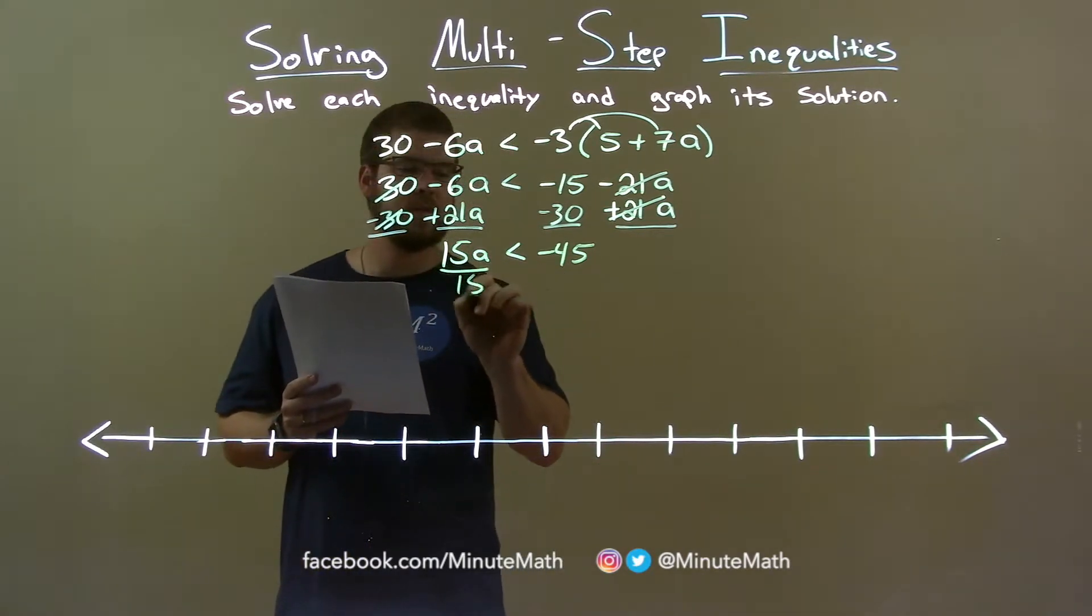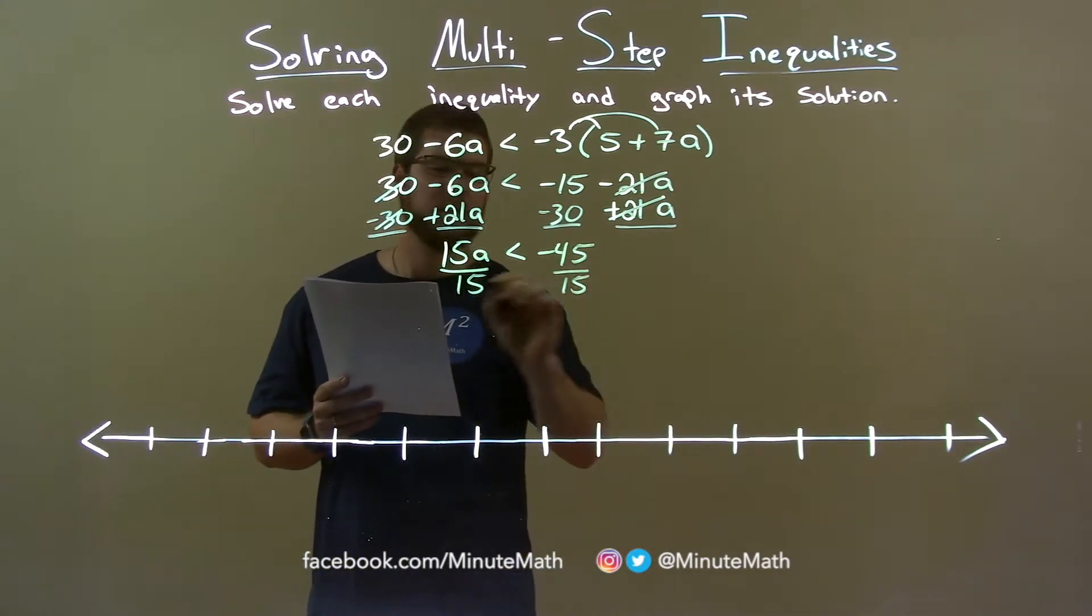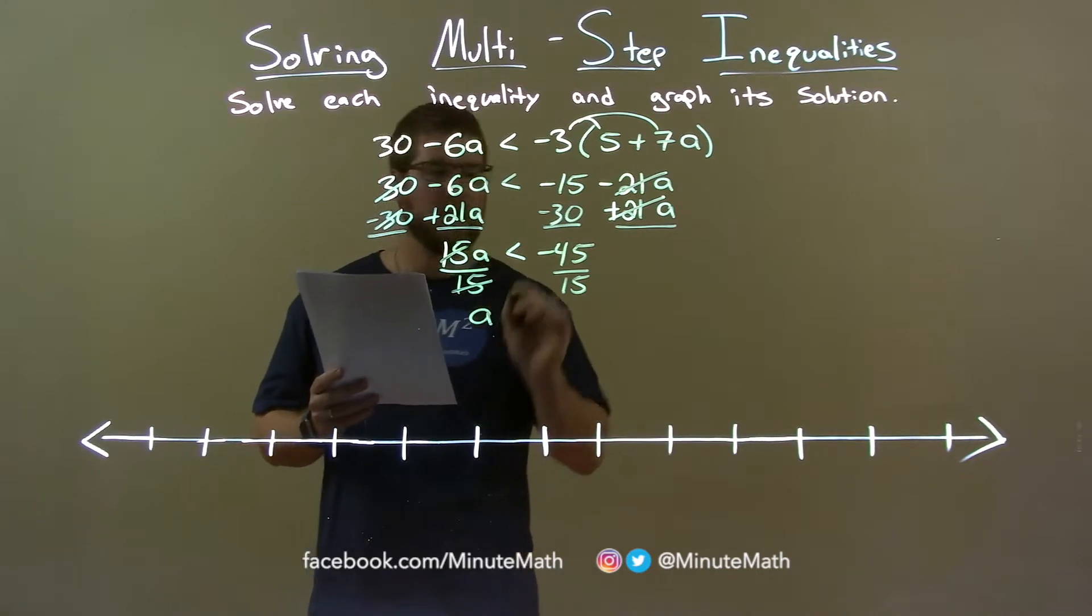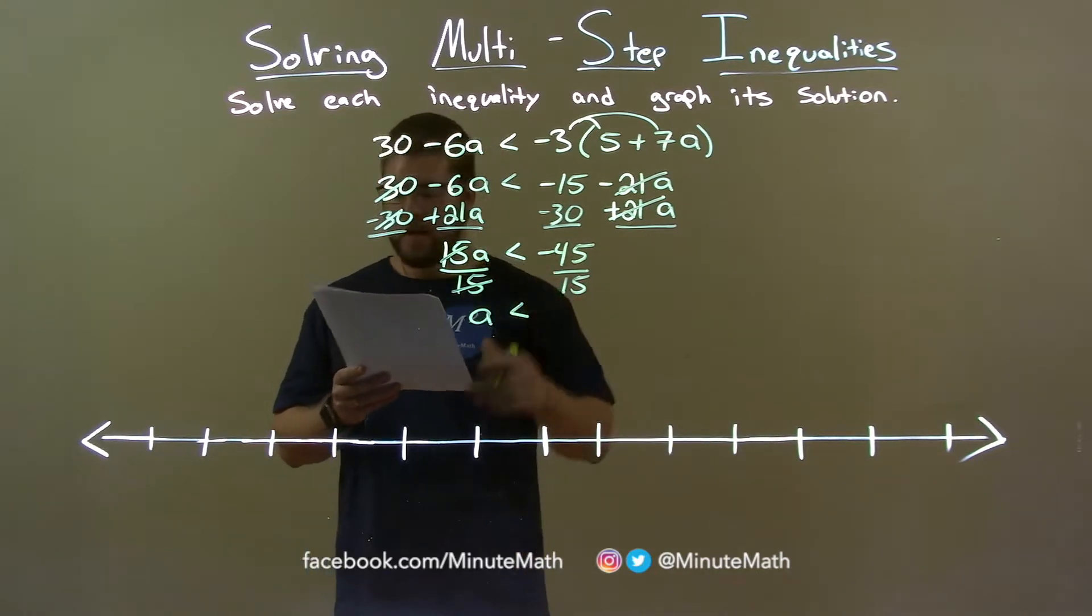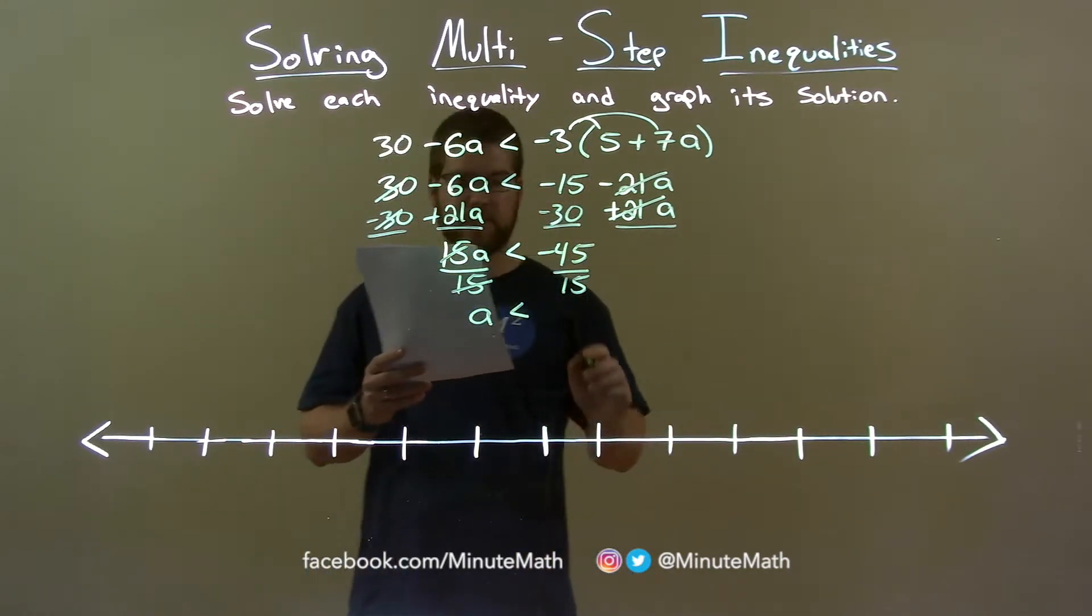Divide both sides by 15, it's my last step here, and now a is by itself. So, less than, and negative 45 divided by 15 is negative 3.